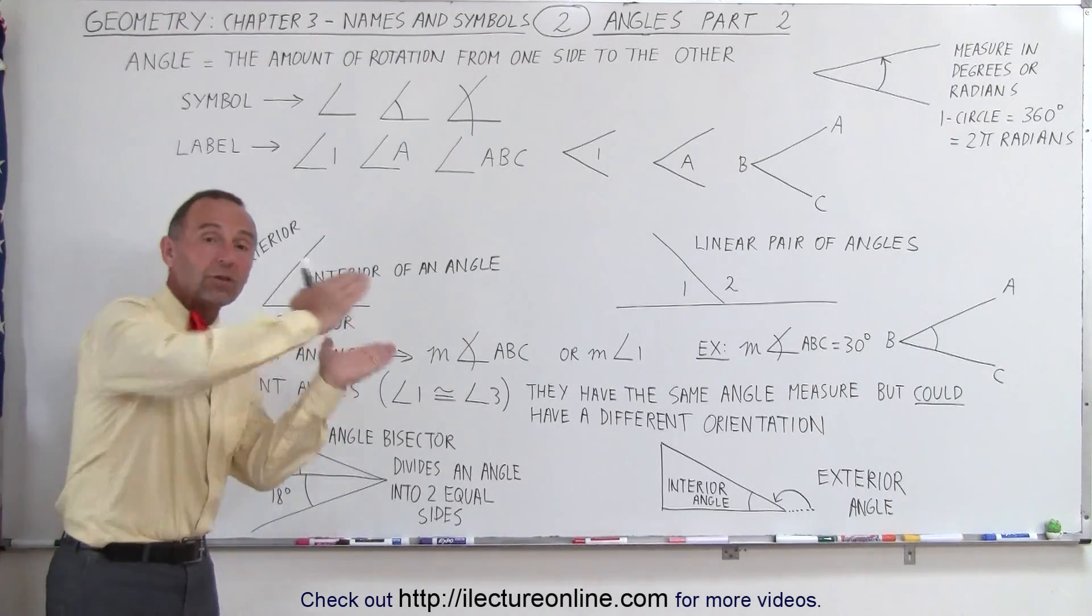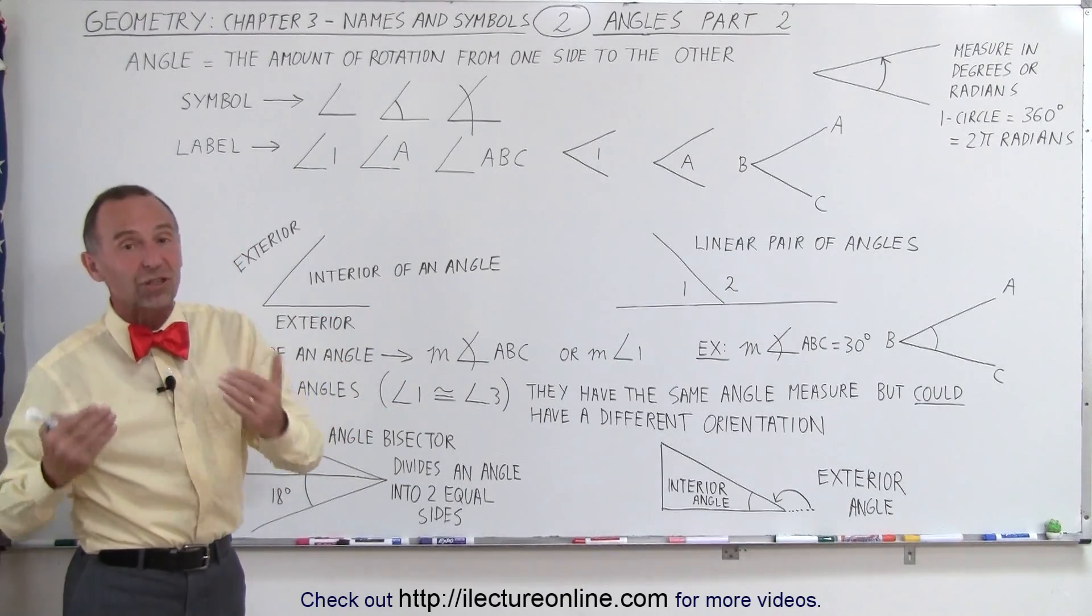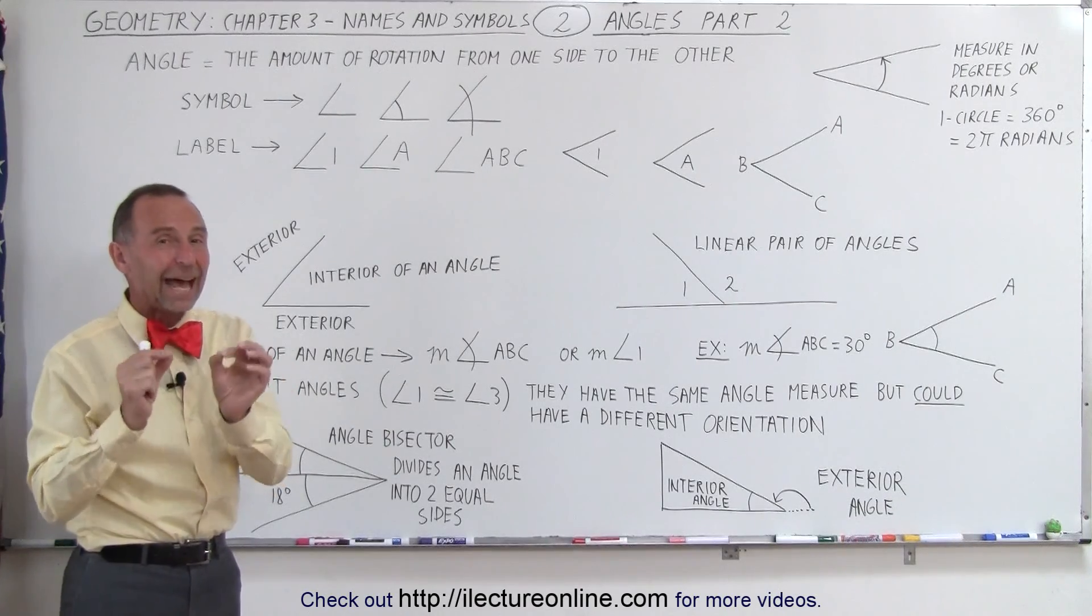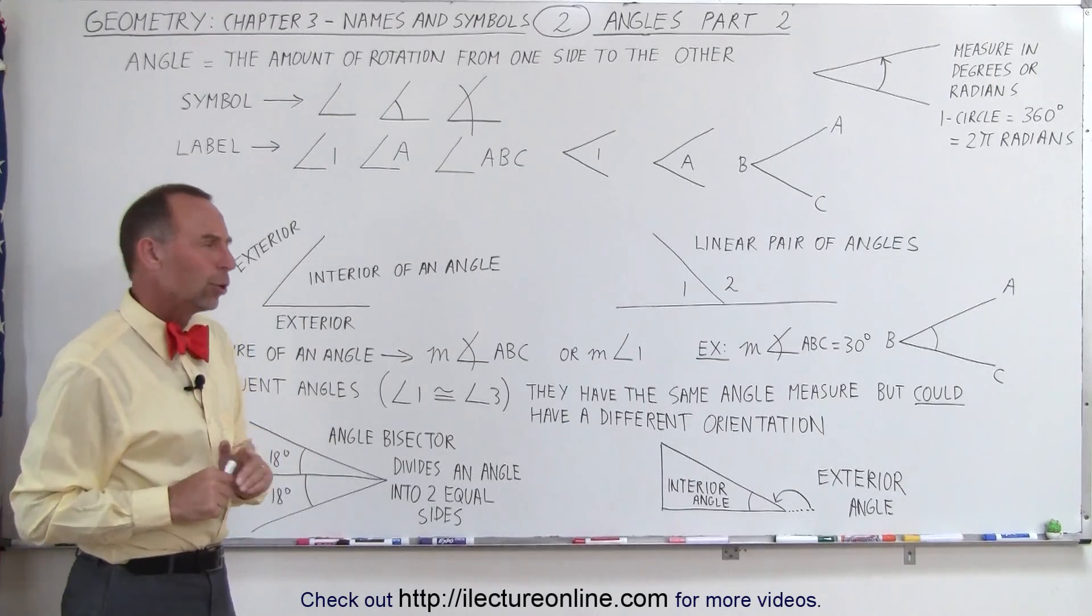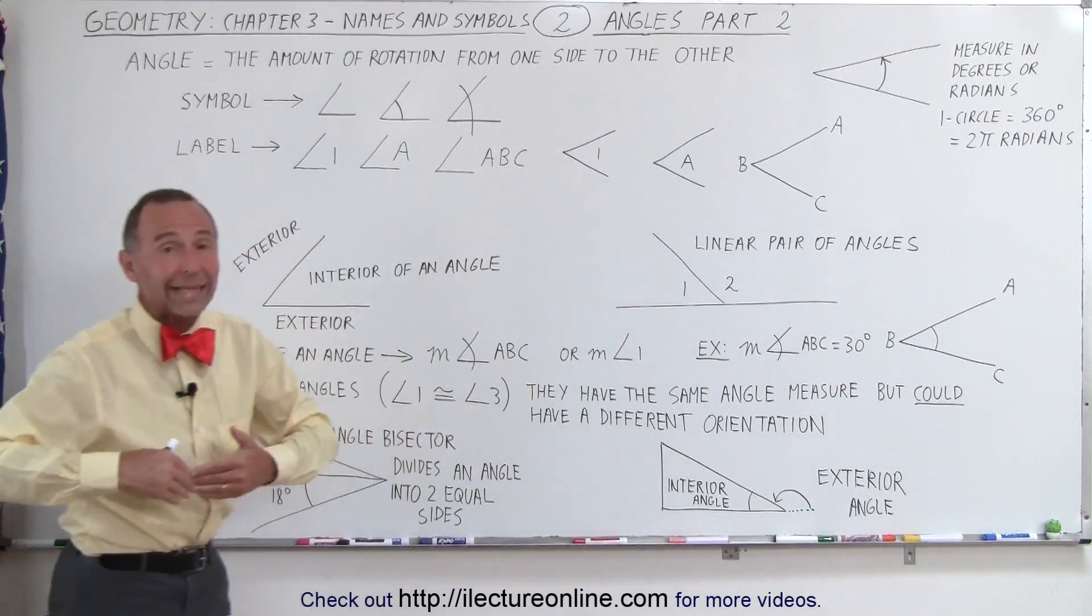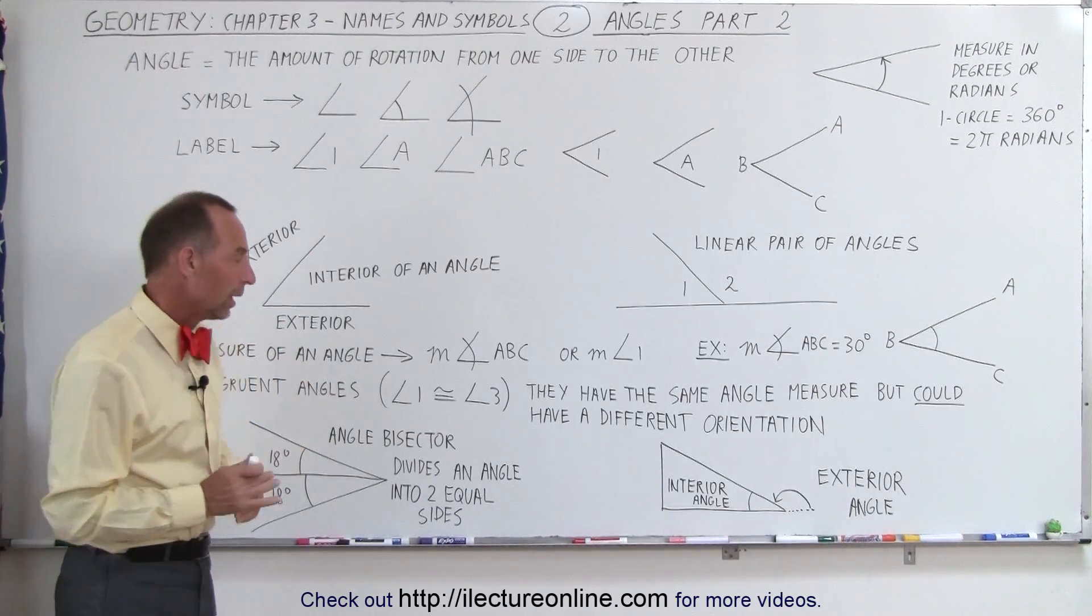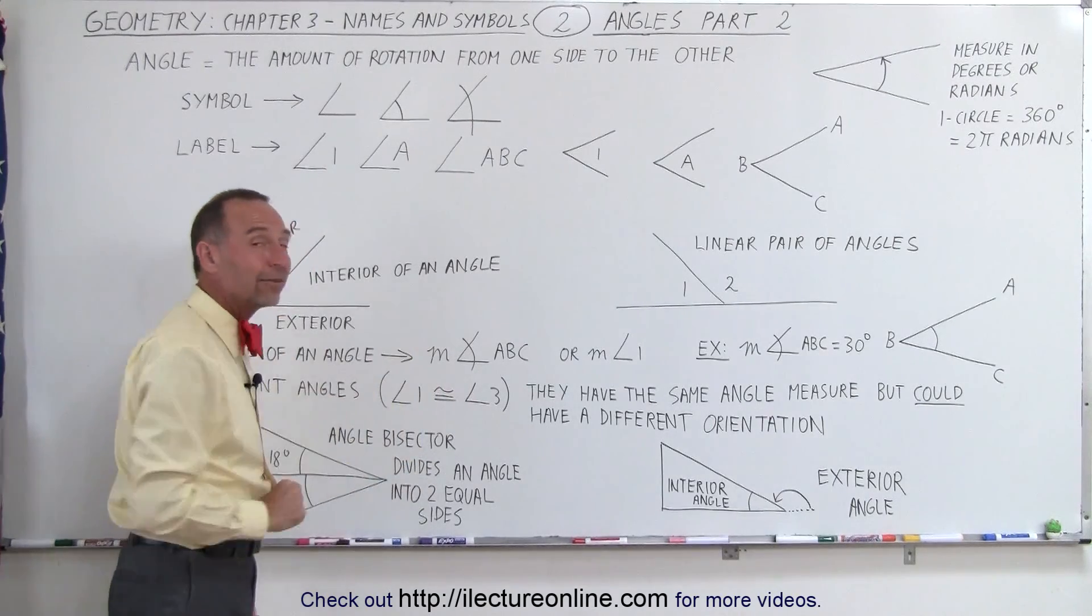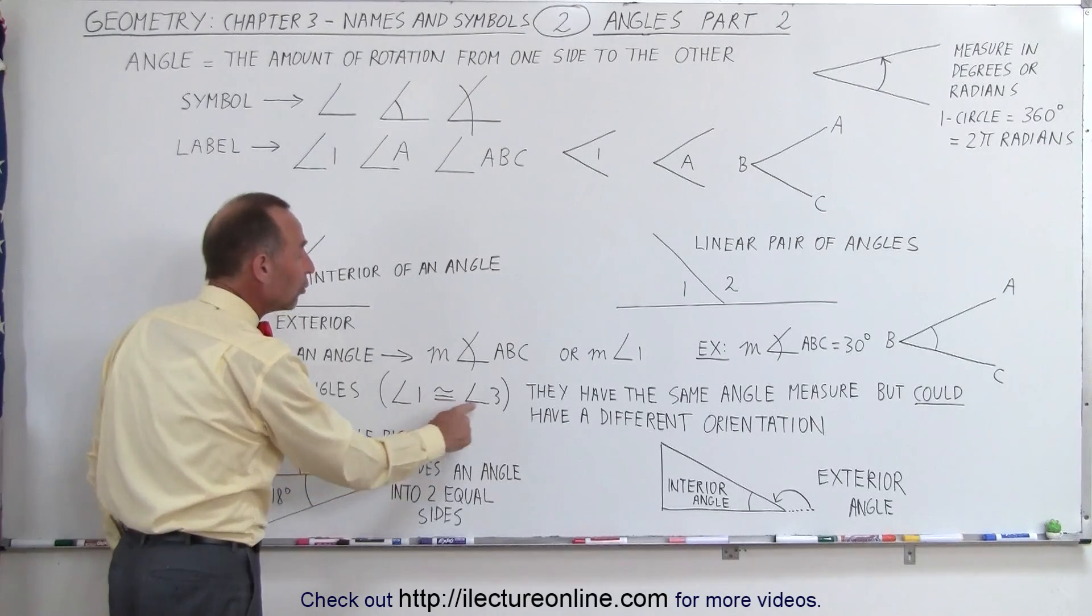Let's say they both have an angle measure of 30 degrees, but one can be oriented in one direction and the other in another direction. They're still congruent. So when you hear the word congruent, they have the same angle measure but could be oriented differently. The word 'could' is important because that also means they could be oriented in the exact same way and we still call them congruent. The symbol we use is an equal sign with a little squiggly line on top. So here we can say that angle 1 is congruent to angle 3.